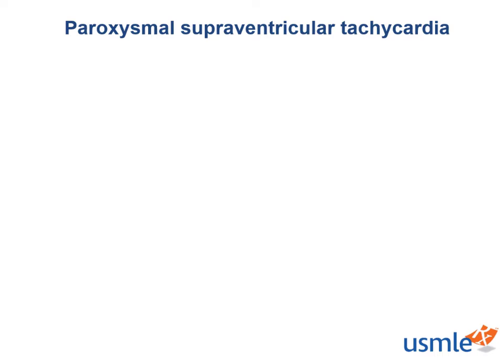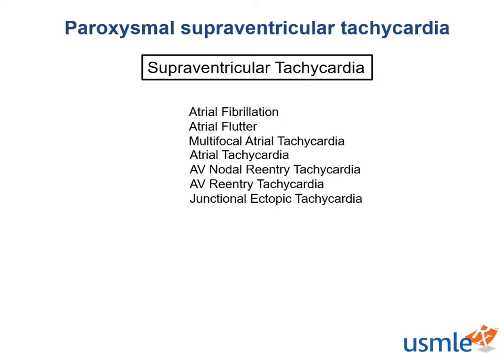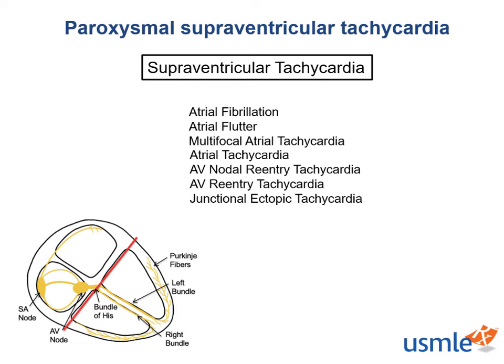There are multiple different types of tachycardias that fall under the category of supraventricular tachycardia. As the name suggests, all supraventricular tachycardias originate above the ventricles — specifically at or above the bundle of His. The term sinus rhythm refers to conduction that originates at the SA node, conducts across the atria, and activates the AV node. Supraventricular tachycardia refers to any condition where the SA node is overridden by conduction in the atria, the AV node, or the bundle of His.